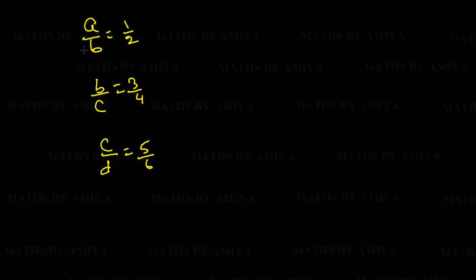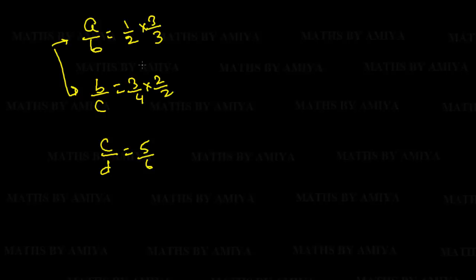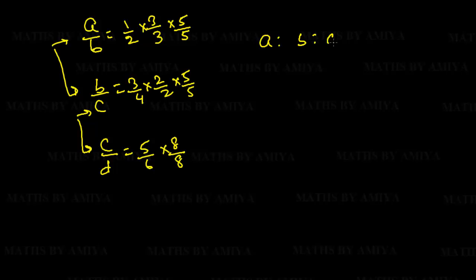We've seen merging with one common term and two ratios. Now we have three ratios with single common terms. We work on the first two ratios first: B is 2 and B is 3, so we multiply 3 and 2 accordingly. Then we have C in common between the second and third ratios. C is 8 in the second and 5 in the third, so we multiply 5 and 8. But when we multiply 5, it also changes B in the earlier ratios, so B becomes 3×2×5. Our final merged ratio: A = 15, B = 30, C = 40, D = 48.